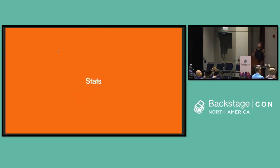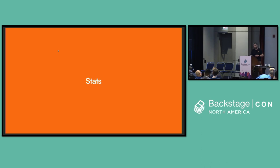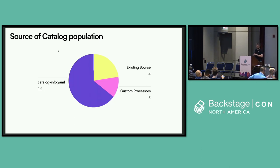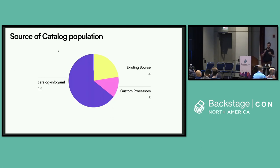Let's look at the quantitative data for a moment. For catalog population, I asked how companies populate their catalog. Twelve of the 20 companies were relying on catalog-info YAML files, which we all know and love. Four companies happened to have an existing source — an existing catalog they were able to connect to — so they had a bit of an advantage getting started. They already had a catalog in place, just connected Backstage to it, and voilà, they had a beautiful catalog.